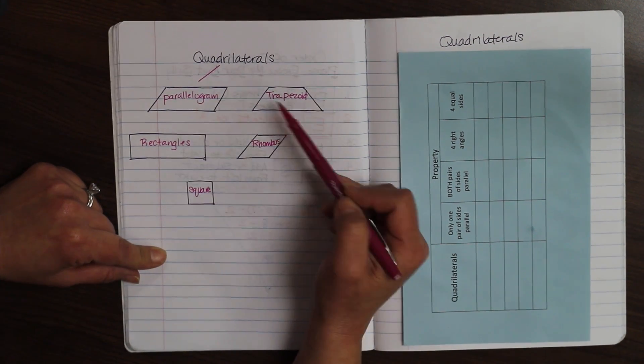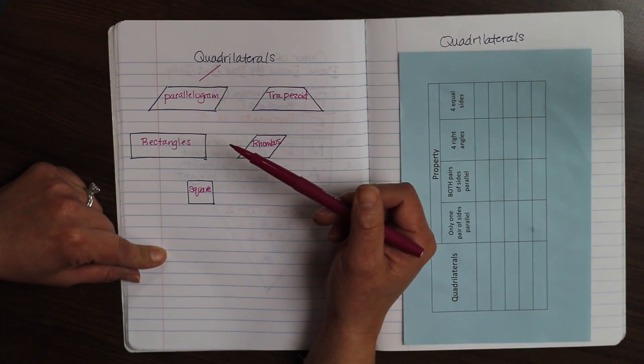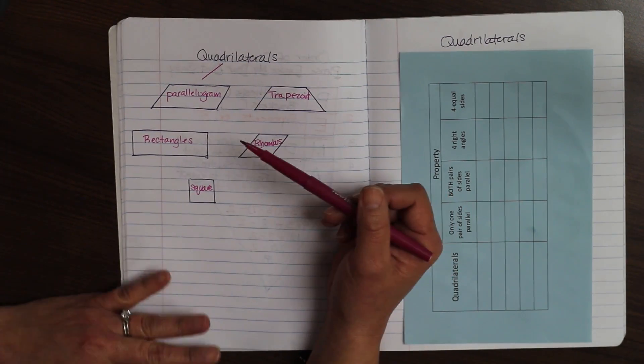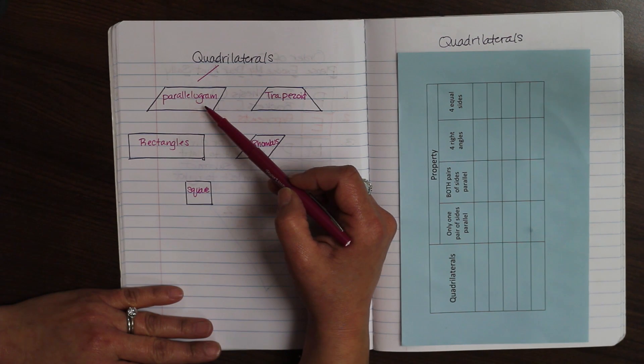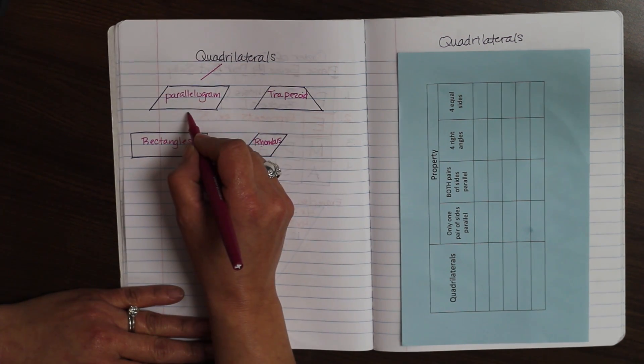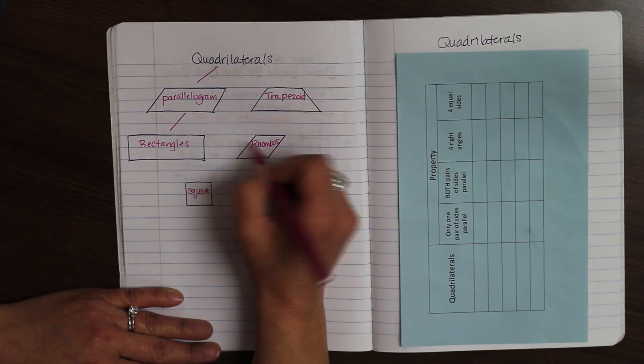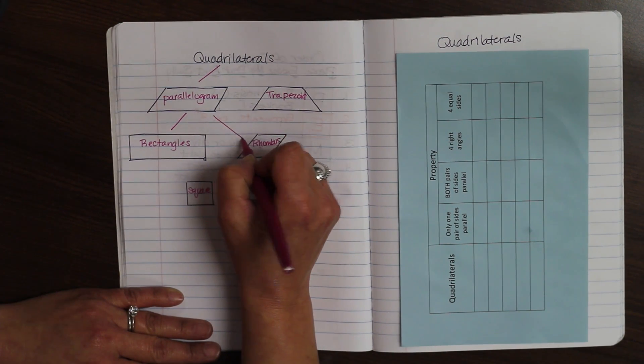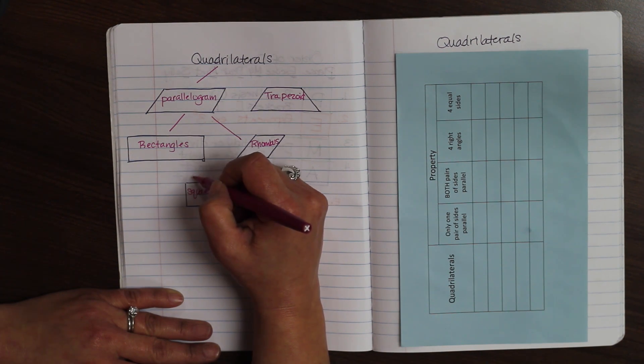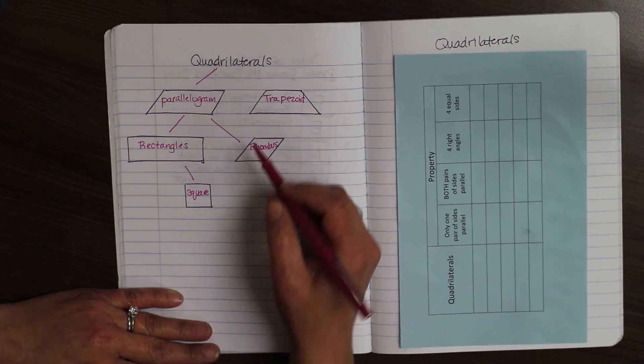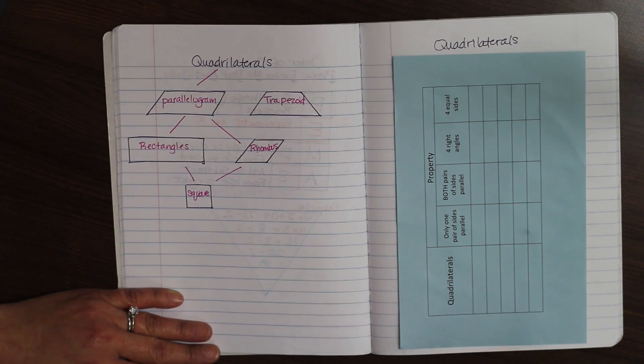So, all of these are quadrilaterals, but what you may not remember is that rectangles are also parallelograms. A rhombus is also a parallelogram. And so is a square. But a square can also be a rectangle, and it can also be a rhombus.